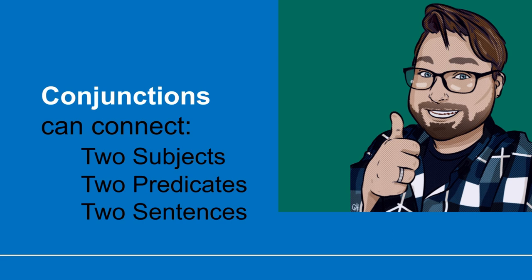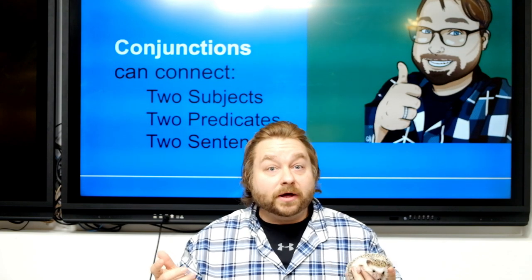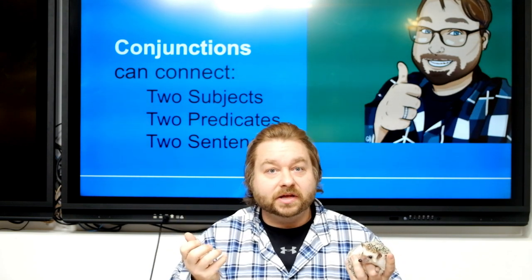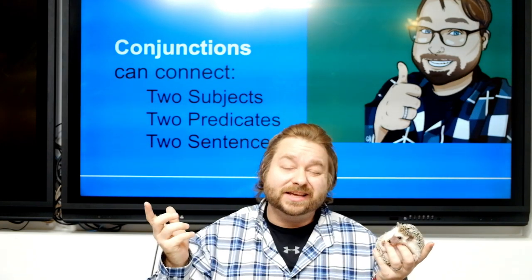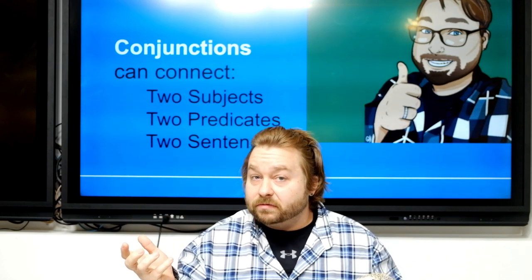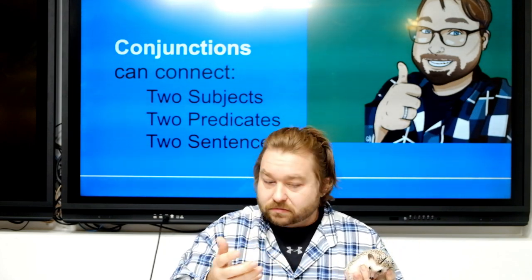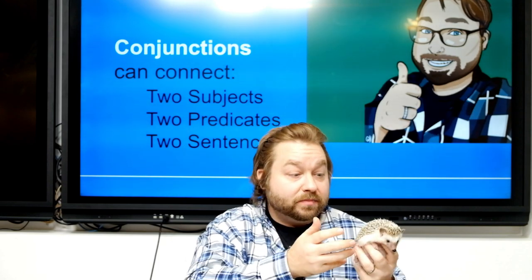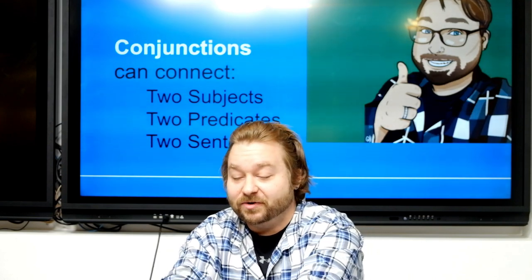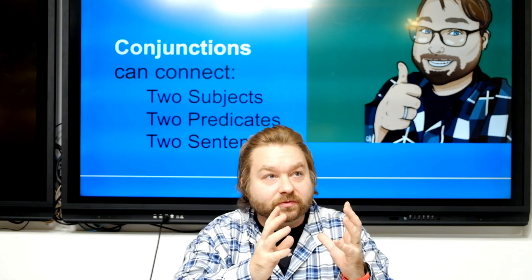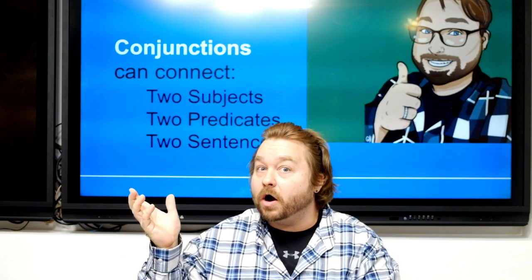What does that mean — two subjects? Remember how we broke a sentence apart: 'The hedgehog is awake.' The hedgehog is the subject, and 'is awake' is the predicate. But what if we have two things? Maybe we have a hedgehog and a bird — 'the hedgehog and the bird are awake.' Now we have two subjects joined with a conjunction.